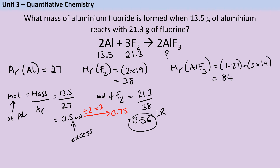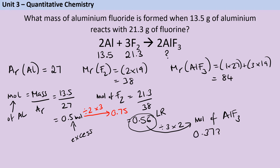Going back to the coefficients to find moles of aluminium fluoride: I divide the moles of fluorine by 3 and multiply by 2, giving me 0.37368... moles. I leave the rounding until the very end. Then my mass is 84 × 0.37368... = 31.4 grams of aluminium fluoride.